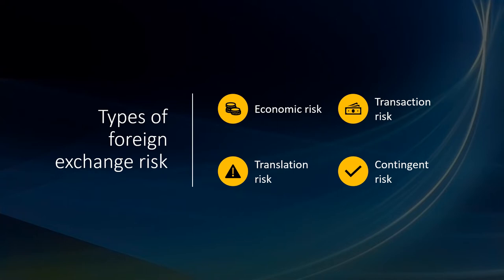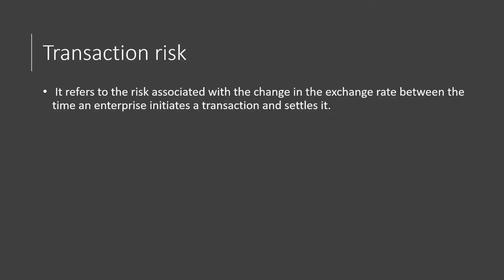Foreign exchange risk is categorized into four types: economic risk, transaction risk, translation risk, and contingent risk. Transaction risk refers to the risk that foreign exchange fluctuations will affect transactions — every transaction, due to its timing, may result in monetary loss because of exchange rate risk. Currency volatility is the primary reason for transaction risk.